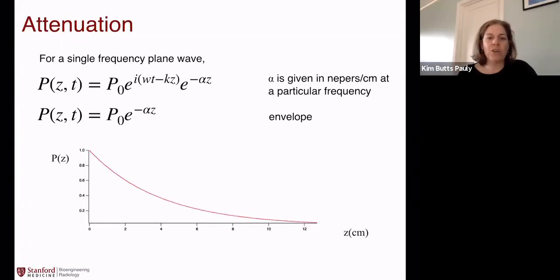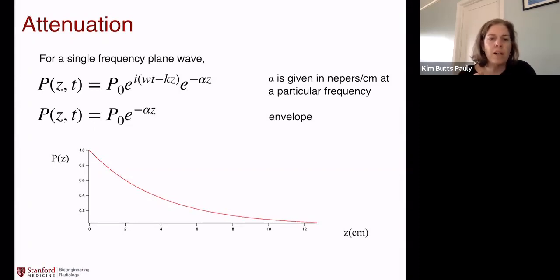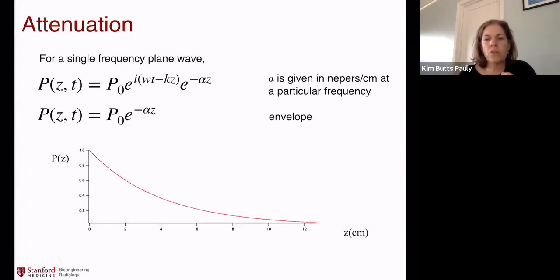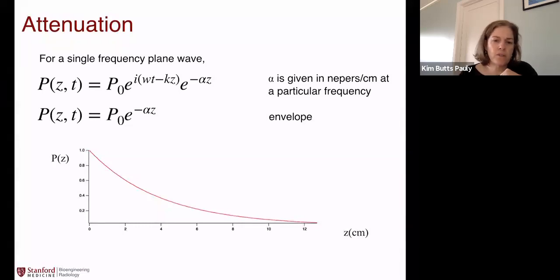Let's talk about attenuation in general. Whenever we apply ultrasound, there's a pressure wave, and the pressure wave is going to fall off exponentially with depth. The equation is shown here — the top line has the part where the sinusoid is oscillating back and forth. If you just want to talk about the envelope, we use the second line. The pressure wave falls off with an attenuation coefficient alpha, given in per centimeter, at a particular frequency. There's no frequency dependence explicitly given in that equation, and it falls off exponentially with depth.